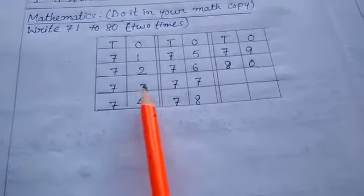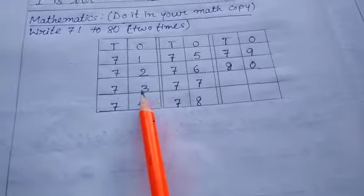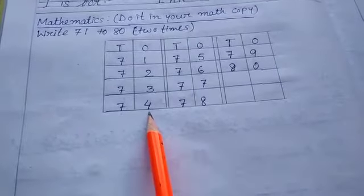73: 7, 10, 3, 1, 73. 74: 7, 10, 4, 1, 74.